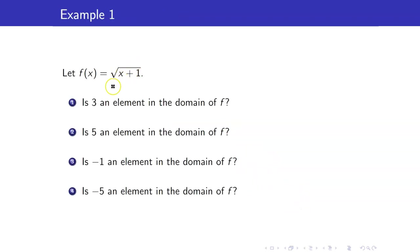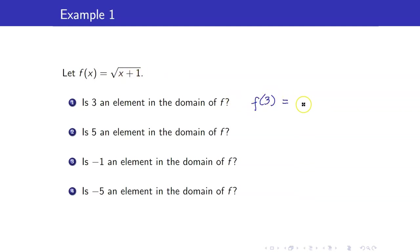For example, suppose that f of x is equal to square root of x plus 1. Is 3 an element in the domain of f? From our definition, we just want to know if f of 3 exists. f of 3 is equal to square root of 3 plus 1, which is equal to 2. So the answer here is yes because f of 3 exists.